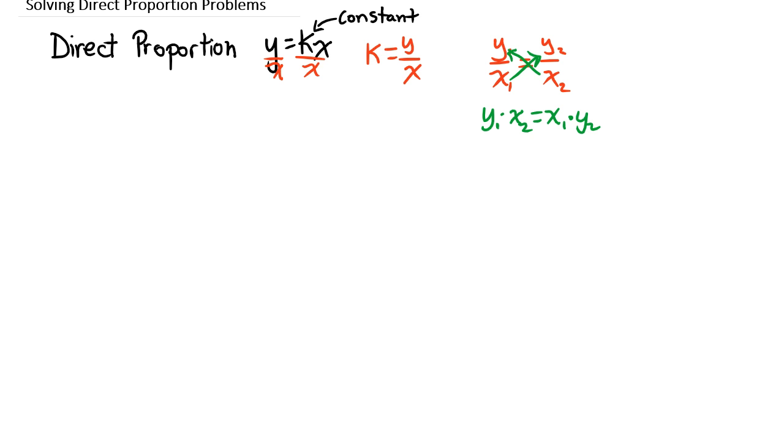Now this is just a fancy way of finding the cross product. And one thing to notice is that the cross products are equal. That is always going to be true if you have a true statement here. So let's take a look at a specific example.